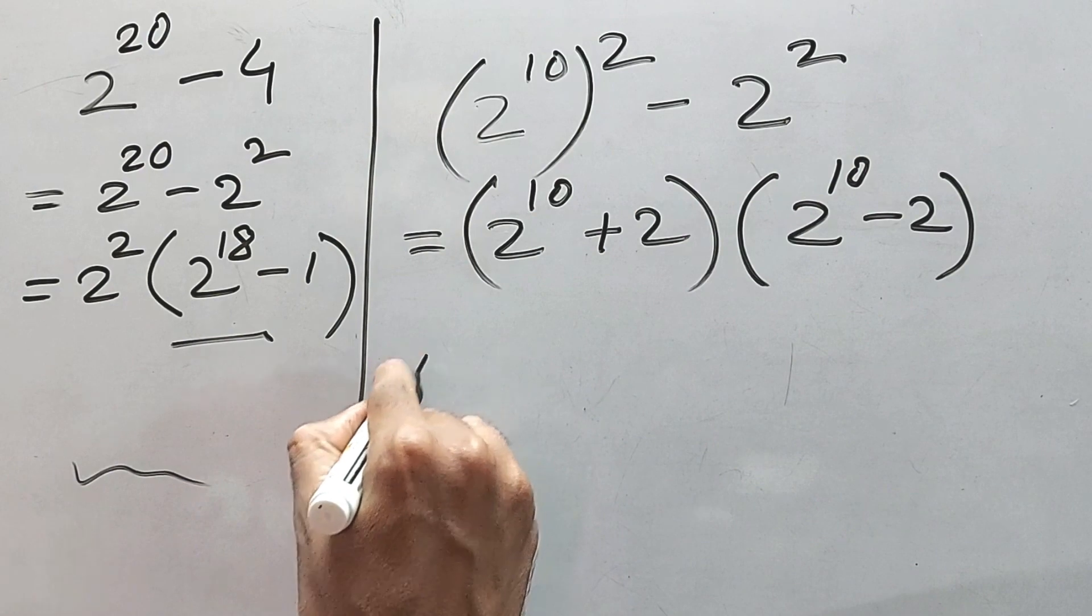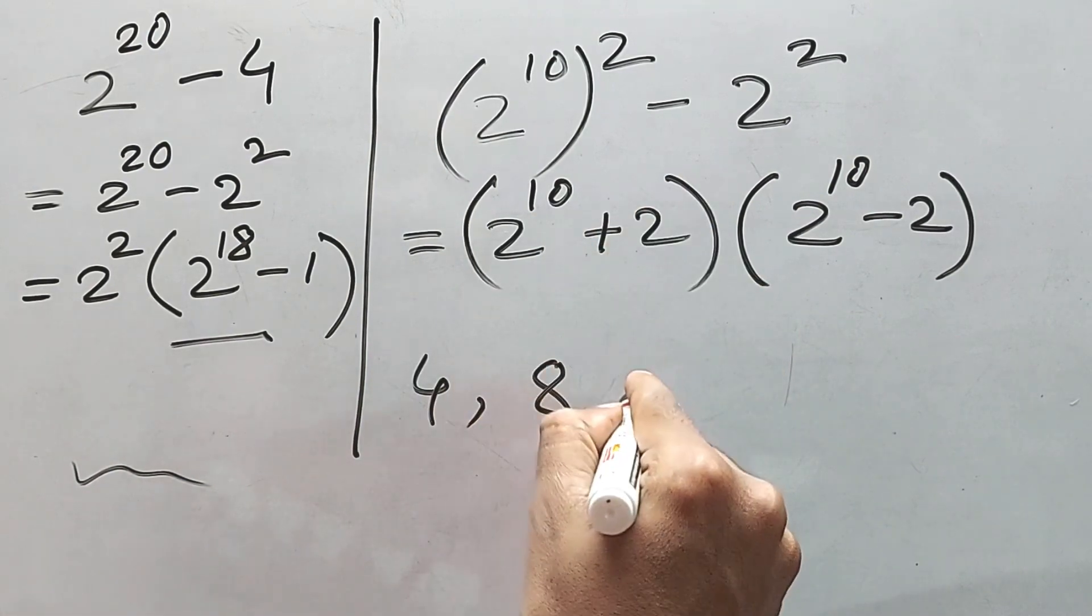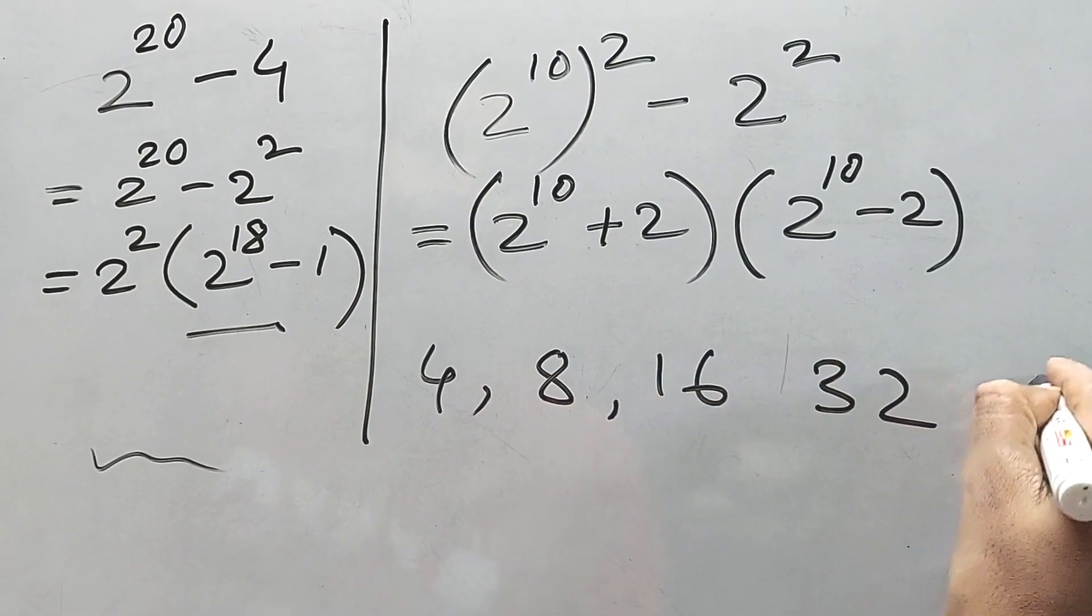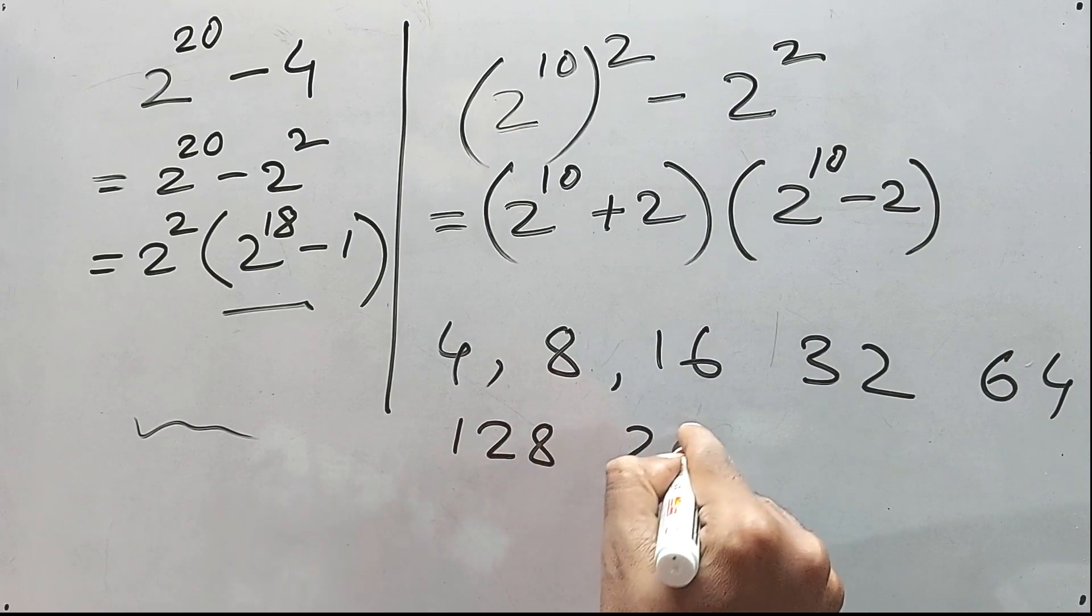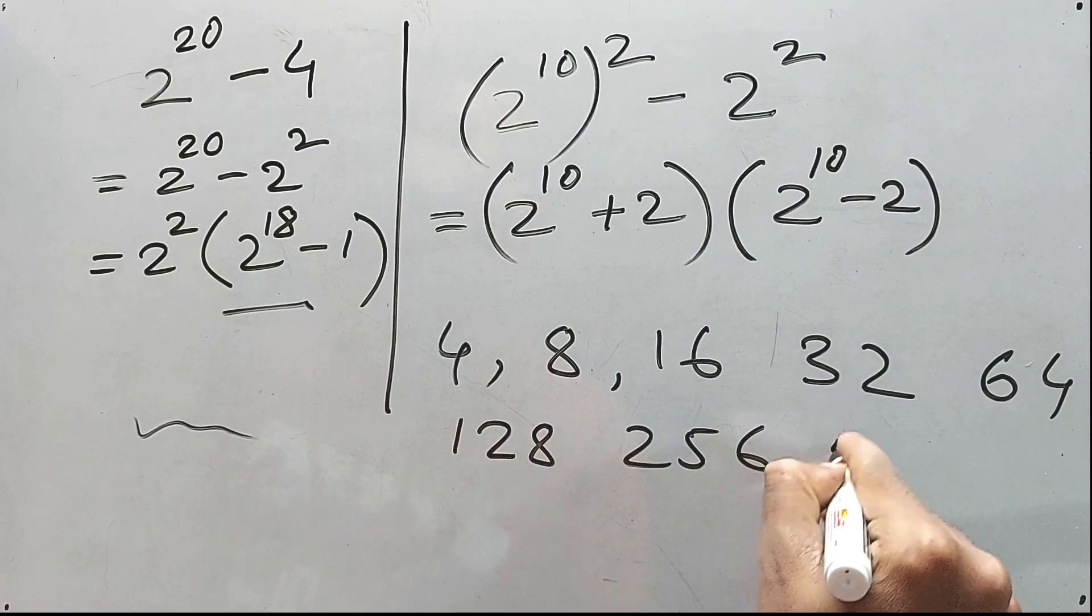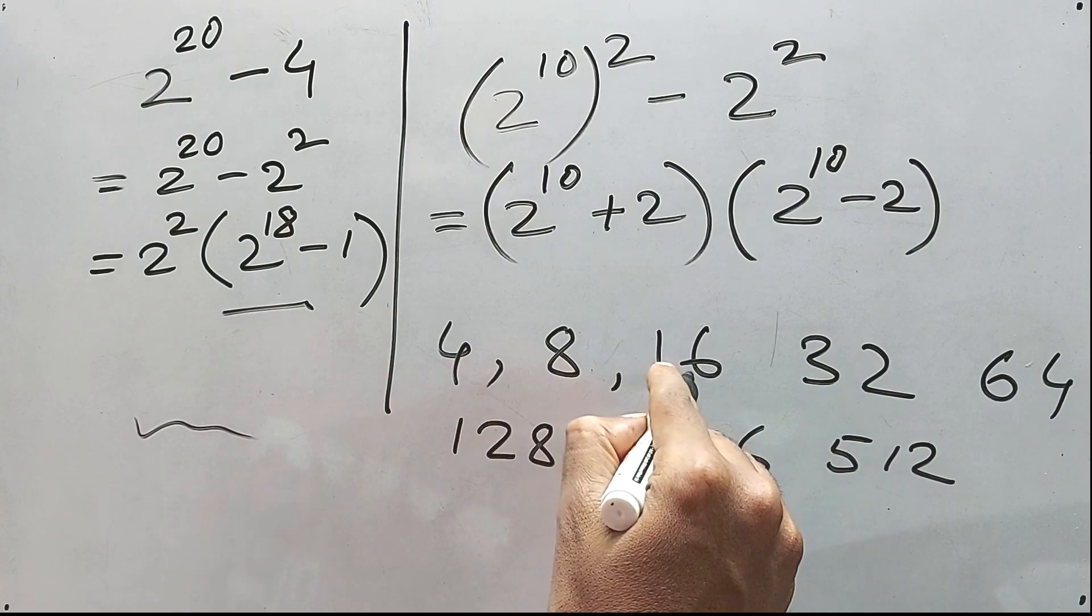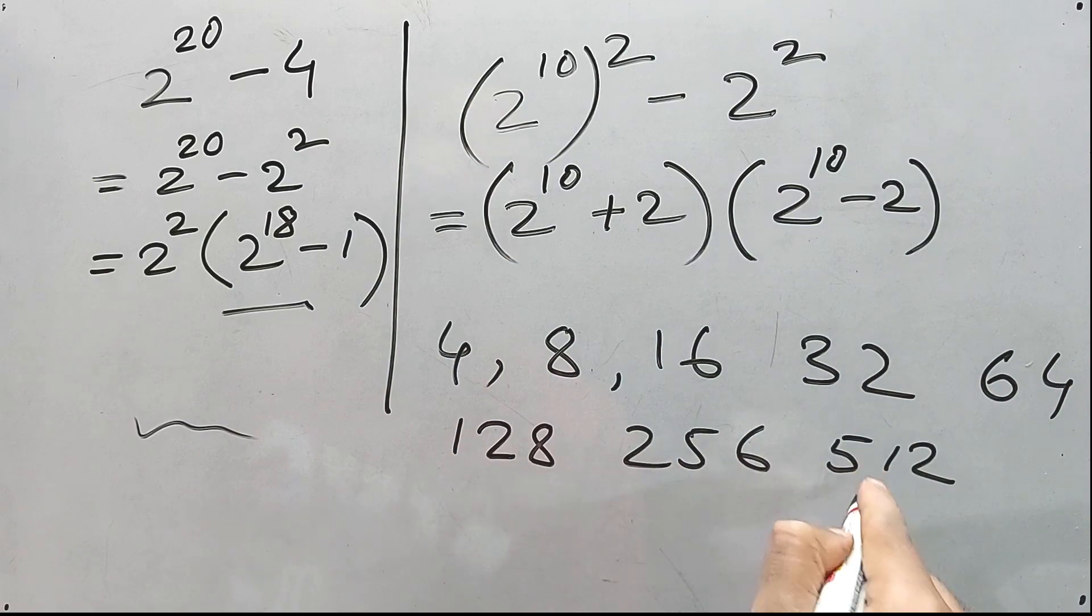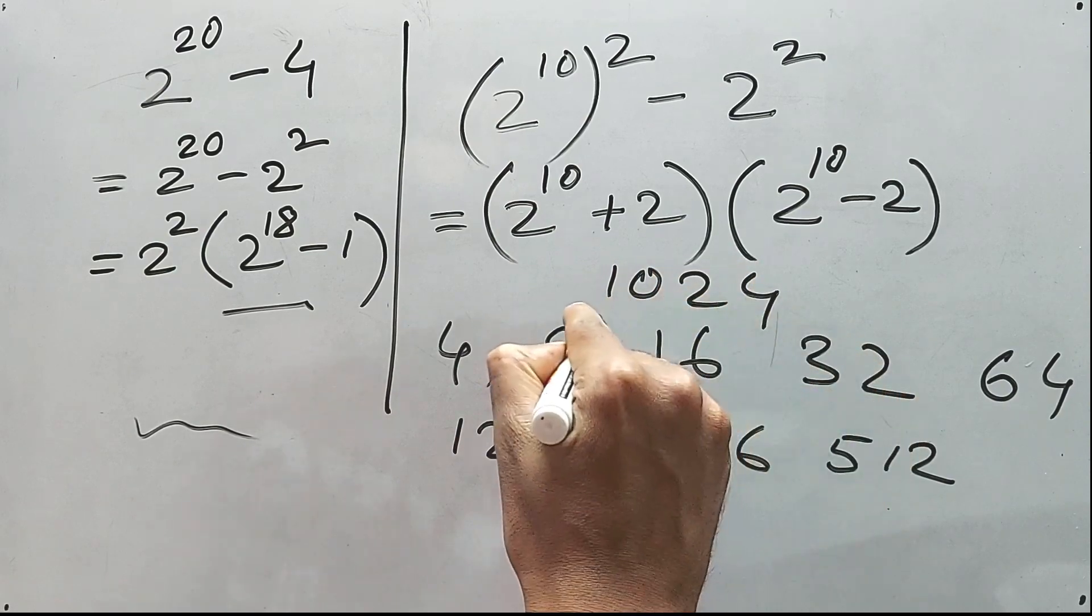What is the value of 2 to the power 10? 2 square is 4, then 2 cube is 8, then 16, then 32, then 64, then 128, then 256, then 512. See, square cube to the power 4, to the power 5, to the power 6, 7, 8, 9 and to the power 10 is double of this.